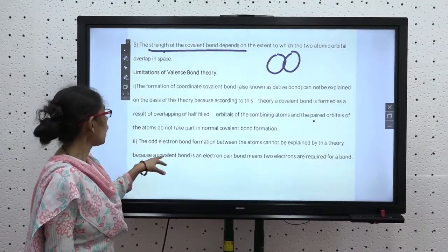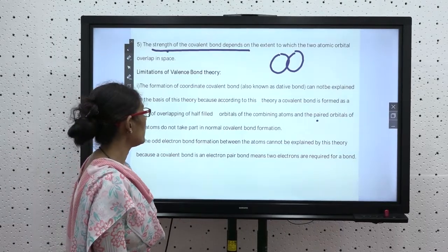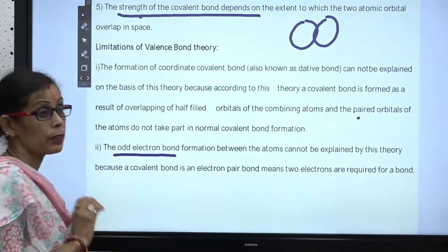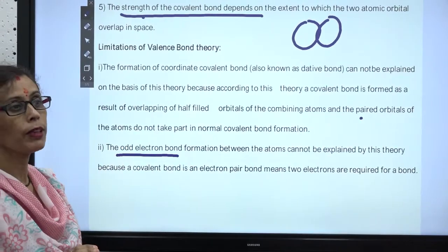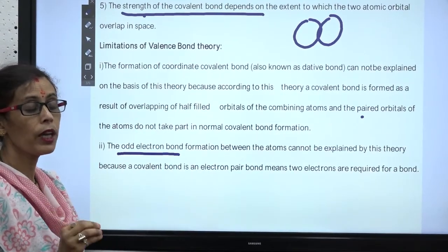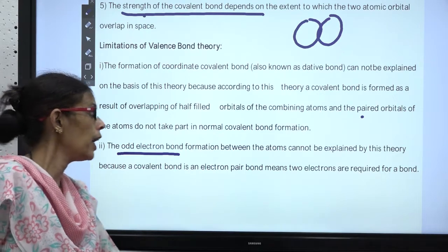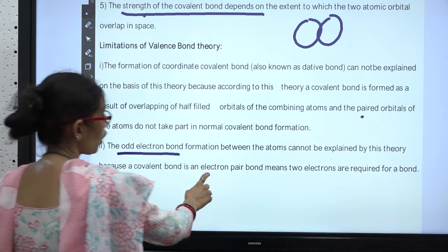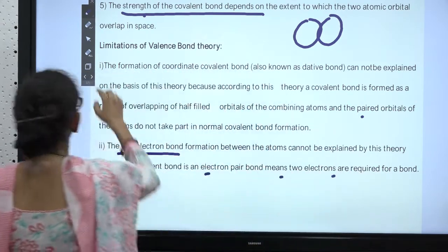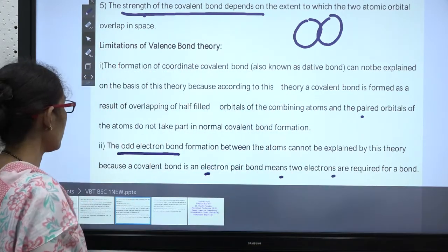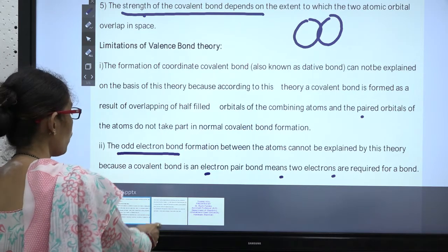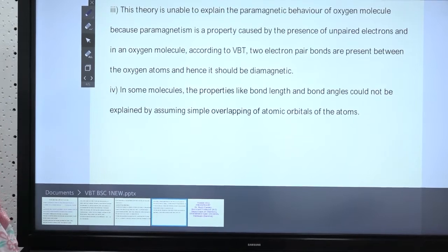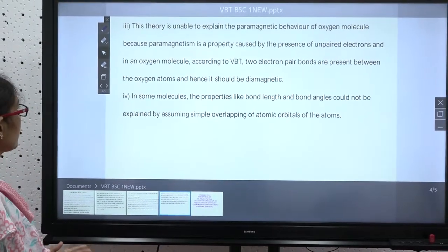The second limitation: the odd-electron bond formation between atoms cannot be explained by this theory. The covalent bond requires two electrons — one from each atom — to share. So an odd number of electrons forming a bond cannot be accounted for, because the theory requires exactly 2 electrons for any covalent bond.